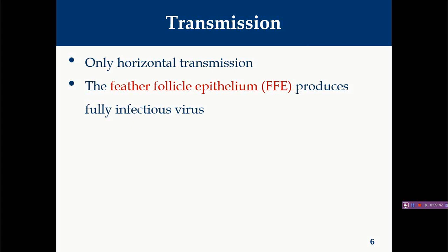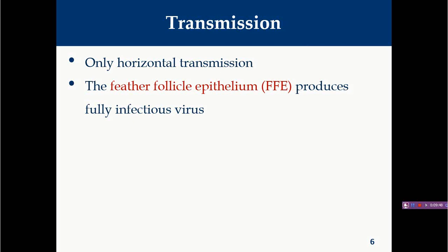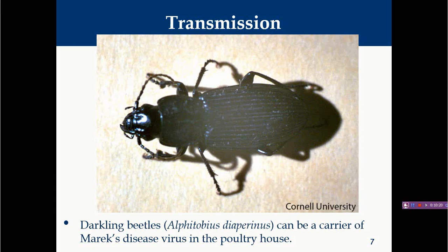Apart from feather follicle epithelial cells, some reports indicate that darkling beetles can also be responsible for transmission of Marek's disease. However, feather follicle epithelial cells remain the primary route because only in these cells can the virus replicate fully, producing cell-free virus that is shed into the environment as feather debris.